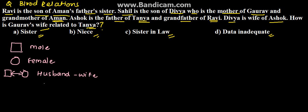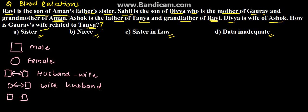These are the basic symbols. There are various other symbols — for example, this is for wife-husband. Two squares will be for brother-brother, two circles for sister-sister, and a square with a circle for brother-sister. Then this is for father-son, etc. From these symbols you can understand how to solve this problem.